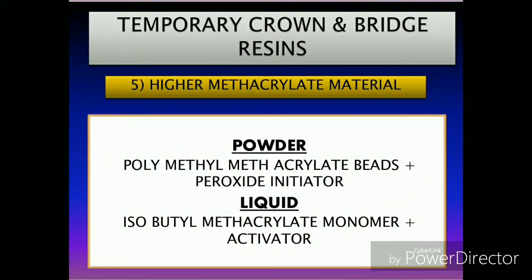The fifth type of temporary crown and bridge resin is the higher methacrylate resin in powder-liquid formulation. The powder contains polymethyl methacrylate beads along with a peroxide initiator, whereas the liquid contains isobutyl methacrylate with an activator.